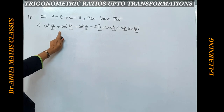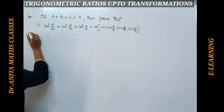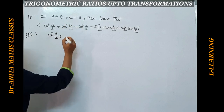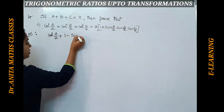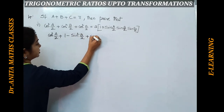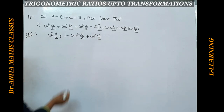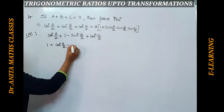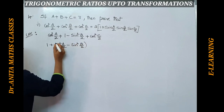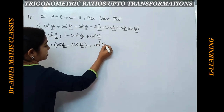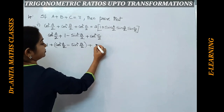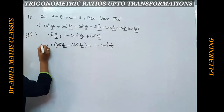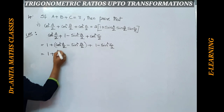The fourth part has the same structure but with a/2, b/2, and c/2. We start with the LHS. Take cos²(a/2), and write cos²(b/2) as 1 - sin²(b/2), plus cos²(c/2). Rearranging, this gives: 1 + cos²(a/2) - sin²(b/2), and then cos²(c/2) is written as 1 - sin²(c/2).